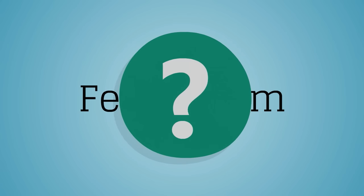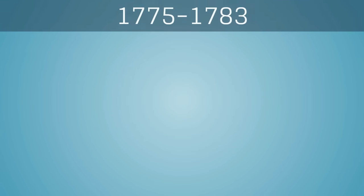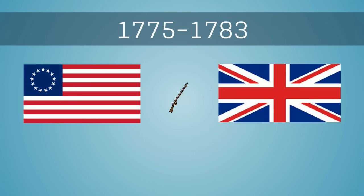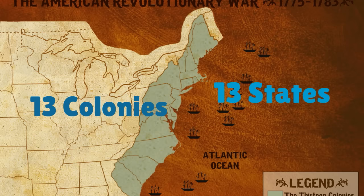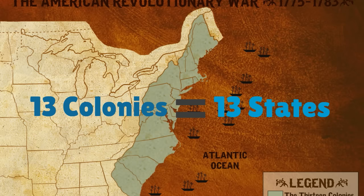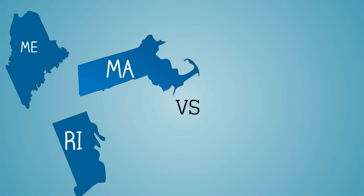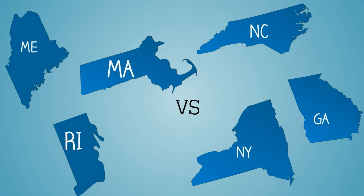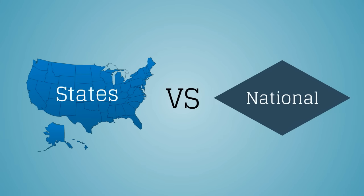Why does the United States have a system of federalism? Remember, Americans fought the Revolutionary War to gain independence from Britain. The 13 former colonies became 13 independent states. States were concerned about losing power to other states, and also concerned about losing their power to the national government.